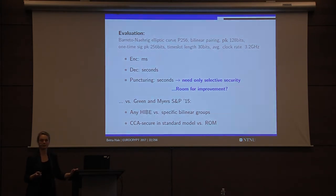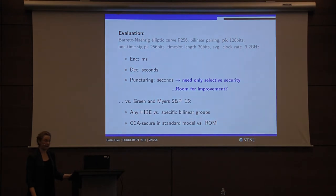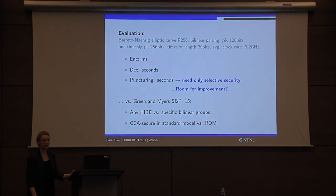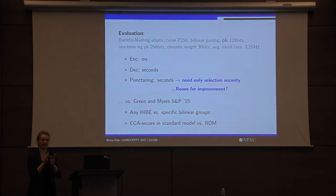Other comparisons: about two years ago at CMP, Green and Myers discussed puncturable encryption. Comparing our work to theirs: here we have a generic hierarchical identity-based scheme, so you can instantiate as you will. Theirs was specific to bilinear groups, so we have much more flexibility. It's also an improvement that we're working in the standard model versus the random oracle model. Referencing Nigel's invited talk earlier in the week about moving from theory to practice — this is now the step where someone can take it from theory to practice.